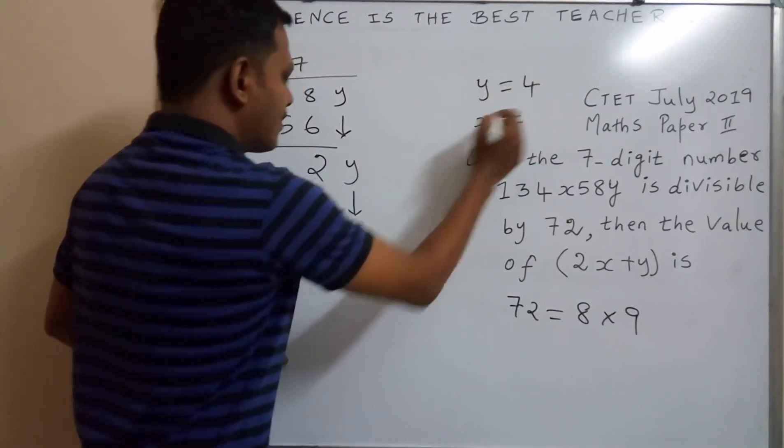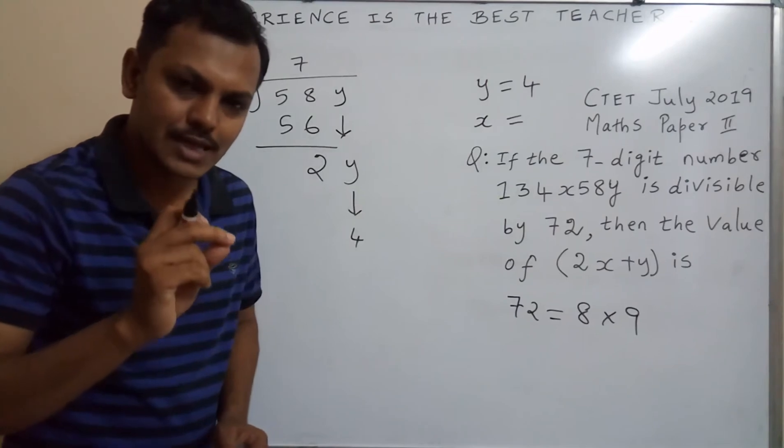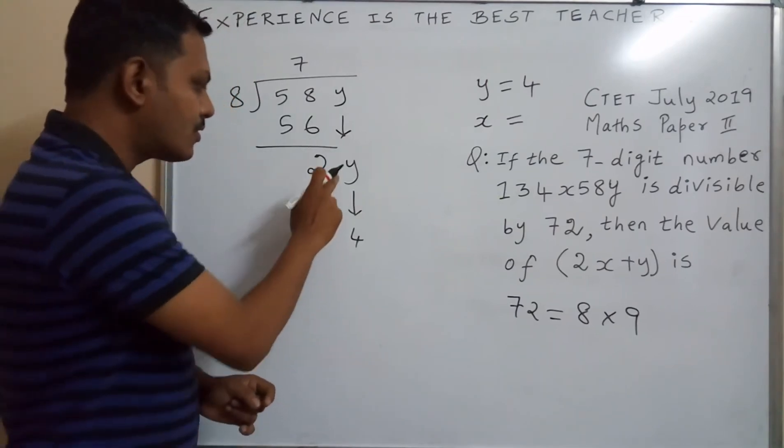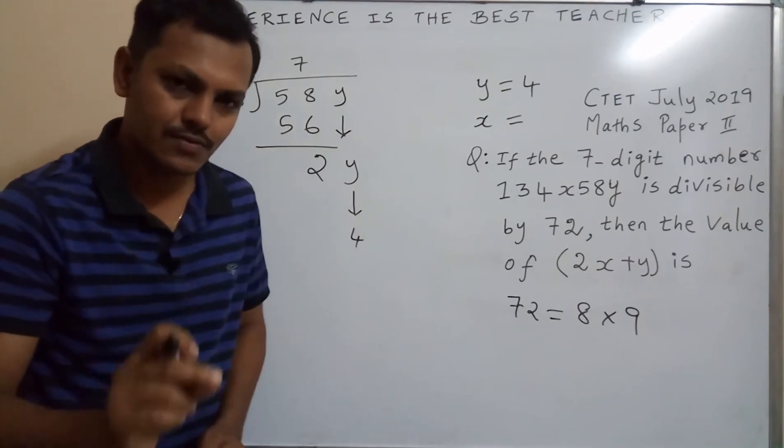Now we will find out the x value. Why we can take y equal to 4 means we must get remainder 0. To write here y equal to 4 only, 3 eights are 24, we get remainder 0, so y equal to 4.